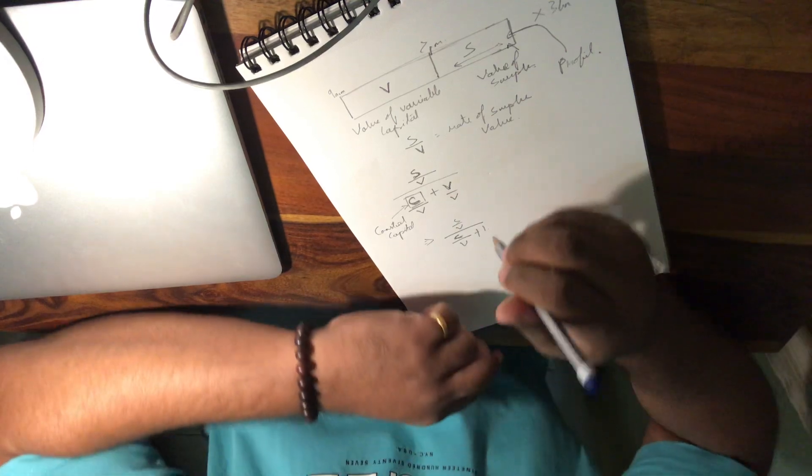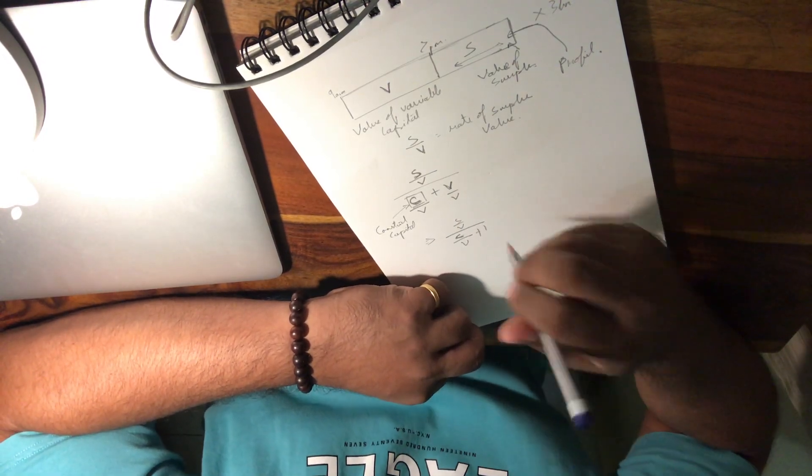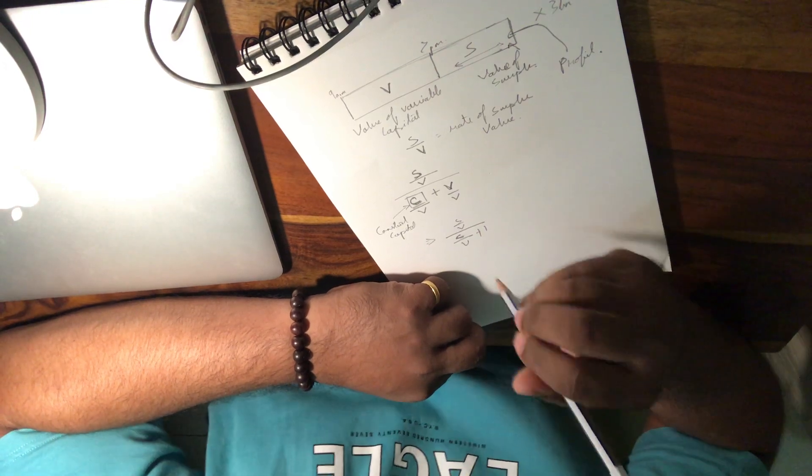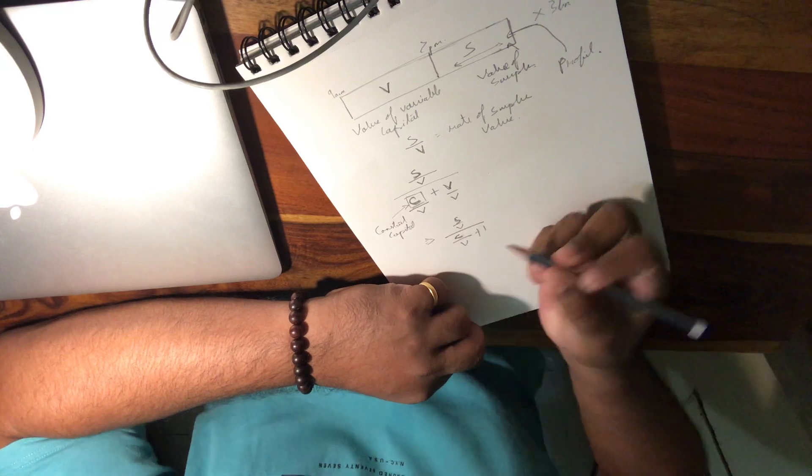According to Marx, the crux of his issue with capitalism is that this value has a tendency of diminishing over a period of time. Why is that? It's because...